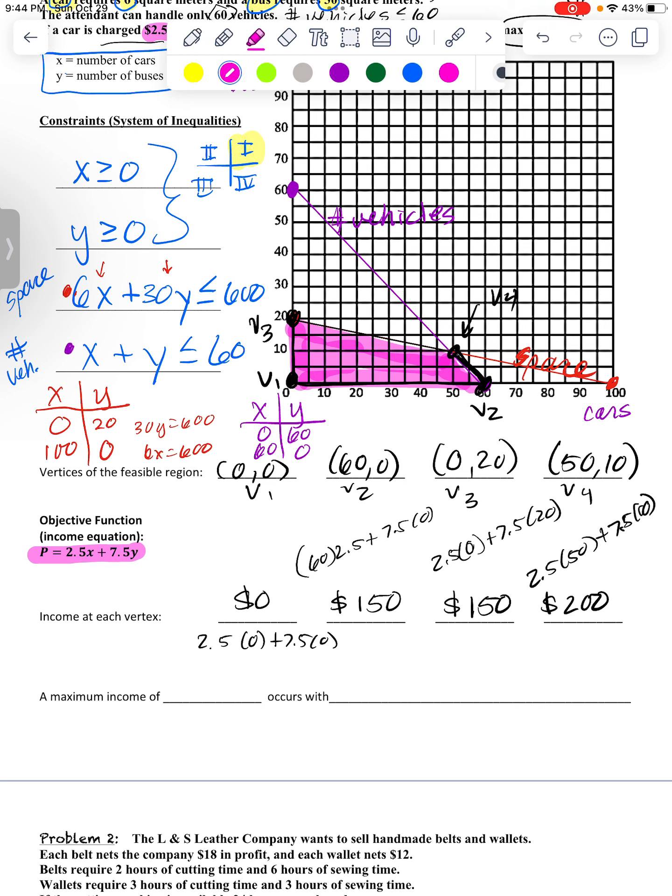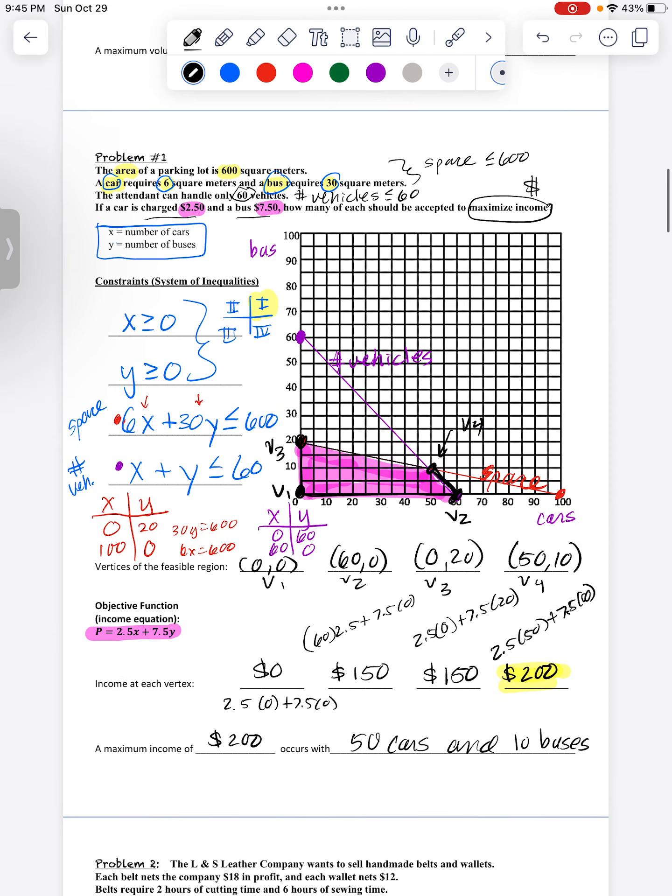So the four possible solutions, obviously, this one is going to net me the most for my profit. So I make my profit statement and say, hey, a maximum income of $200 can be made with 50 cars parked and 10 buses. So definitely you have to walk through it one step at a time or it can be really overwhelming. But hopefully this will help you get through a couple on your own. Bye.